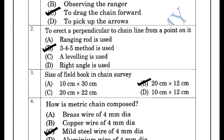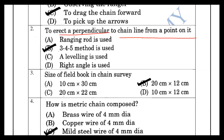We will set the right angle to the chain line using the 3:4:5 ratio method to establish a perpendicular to the chain line.